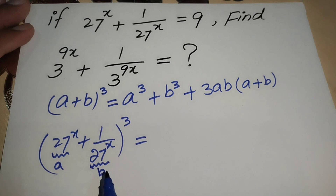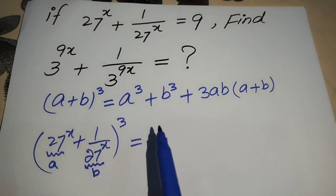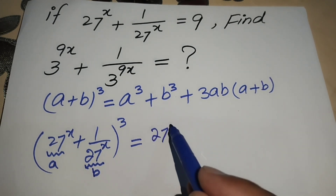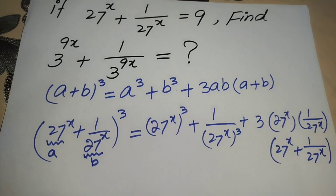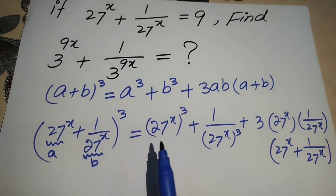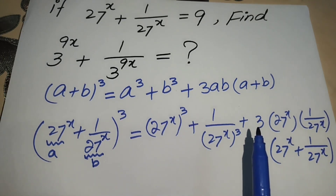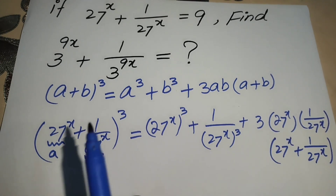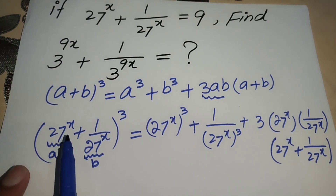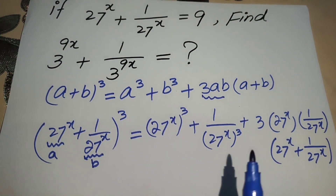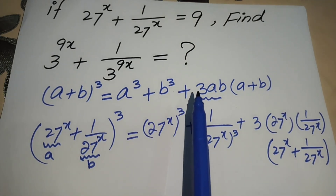When we apply the formula, we get: 27^x³ + 1/27^x³ + 3ab, where the value of a is 27^x and the value of b is 1/27^x. We substitute all the values of a and b into the formula.